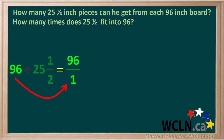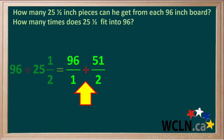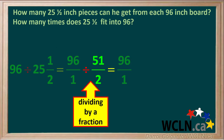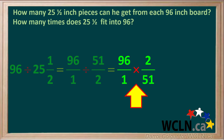To find out, we need to divide 96 by 25 and a half. 96 is the same as 96 over 1. And the mixed number 25 and a half needs to be converted to an improper fraction. The denominator is 2 and the numerator is 25 times 2 plus 1, which is 51. So the improper fraction is 51 over 2. Our question is 96 over 1 divided by 51 over 2. Dividing by a fraction is the same as multiplying by its reciprocal, so we multiply by the reciprocal of 51 over 2, which is 2 over 51. Now we have 96 over 1 times 2 over 51.